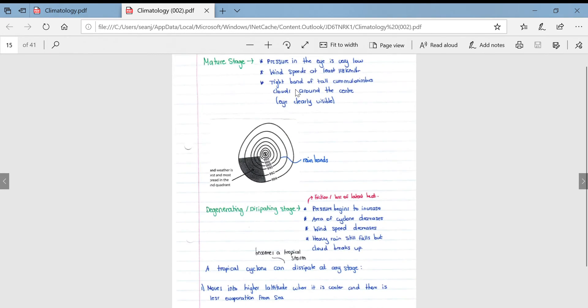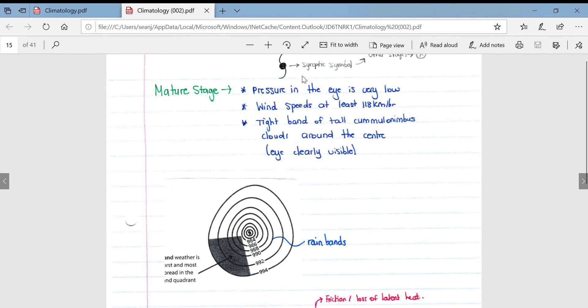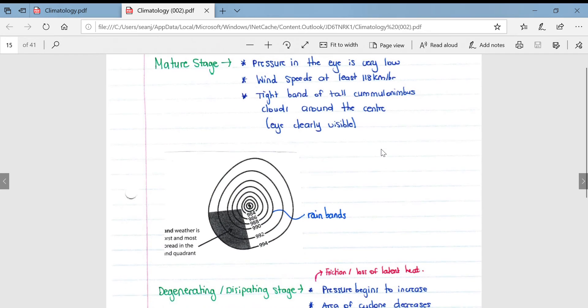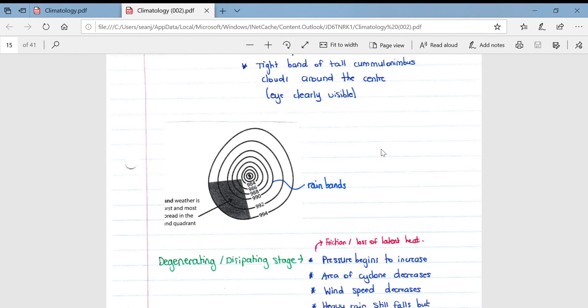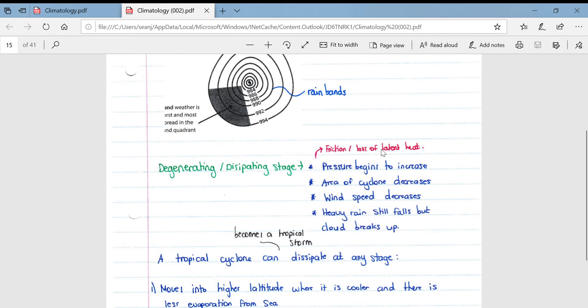If we go to the mature stage, firstly if we just look at the synoptic symbol for a mature cyclone, it is a dot with these lines coming off it like that in a circular motion. So the pressure in the eye is very low. Wind speeds are at least 118 kilometers per hour. A tight band of tall cumulonimbus clouds are now around the center and the eye is clearly visible.